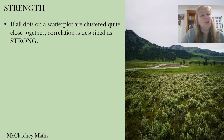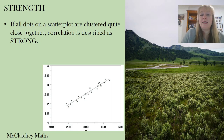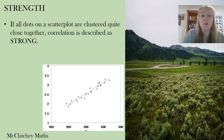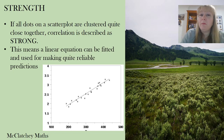If all the dots are quite clustered close together, we describe that correlation as strong — very few dots are far from the line of best fit. That would also mean we could make fairly reliable predictions using that data. As the dots become more spread out, that relationship weakens.